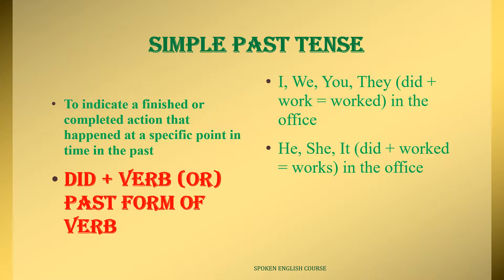In simple past tense, everyone — I, you, we, they, he, she, it — all use did plus verb. Compare this to simple present tense, where plural subjects use do plus verb and singular subjects use does plus verb. In simple past tense, did plus verb is used for all. So: I worked in the office, you worked in the office, we worked, they worked, he worked, she worked, it worked.